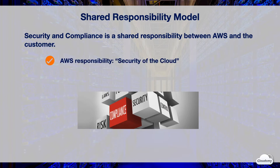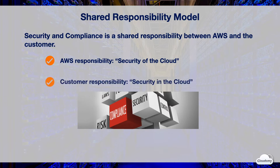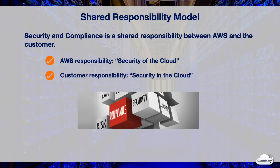AWS protects the infrastructure that runs all the services, such as physical facility, networking, virtualization software, and hardware which compose the infrastructure. Customers are responsible for security in the cloud. They must manage the security of resources created on top of AWS infrastructure, such as data inside S3, firewalls of EC2 instances, and security credentials of IAM users.